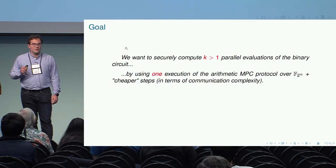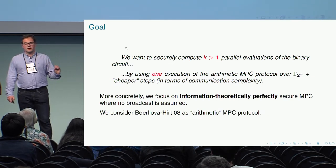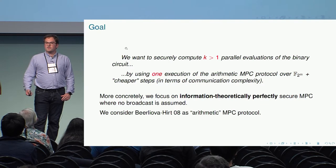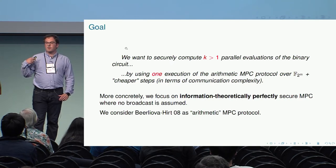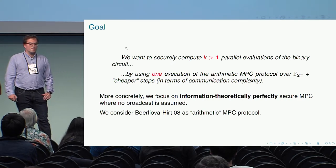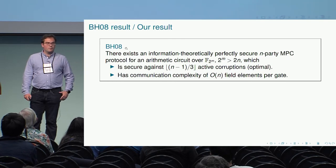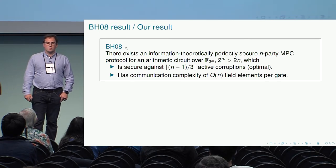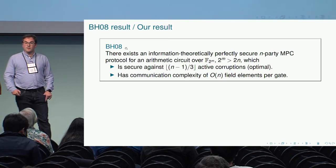What we did concretely was to focus on the case of information theoretically perfectly secure multiparty computation with no broadcast. In that case, the best protocol, at least for the strongest adversary, is the one by Beerliová and Hirt from 2008. They are able to tolerate (n-1)/3 active corruptions, which is optimal in this setting. The protocol has a communication complexity of O(n) field elements per gate.